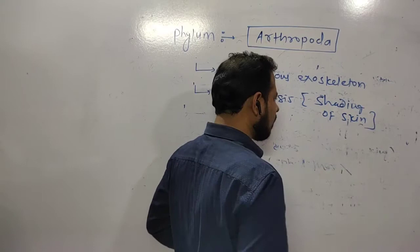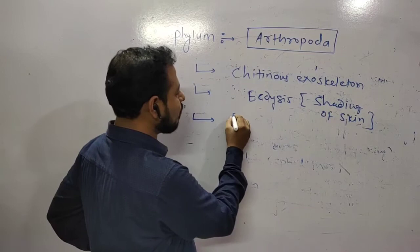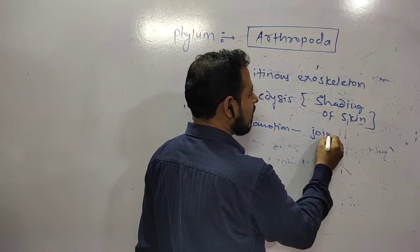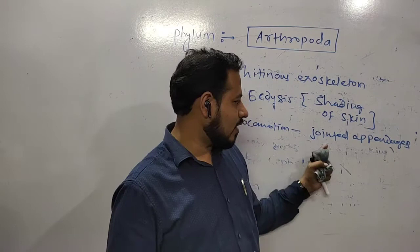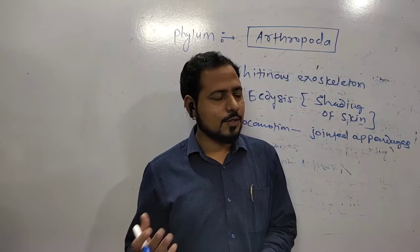Ecdysis means their exoskeleton periodically sheds. That is voluntary shedding of their skin and they again get another new brand exoskeleton. Their locomotion is by jointed limbs - locomotion occurs by jointed legs or jointed appendages. Insects that can fly will have two pairs of wings. Generally animals have three pairs of jointed limbs, two pairs of wings. This is a typical feature.